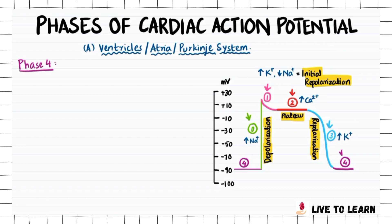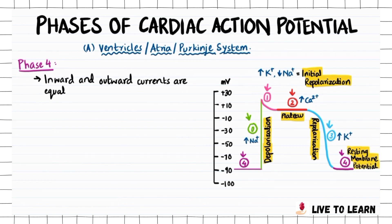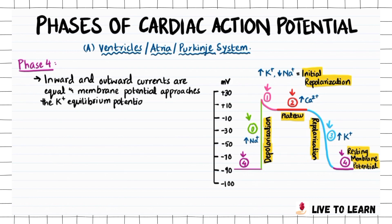Phase 4, the part shown in purple on the graph, represents the resting membrane potential. It is the period during which inward and outward currents are equal, and the membrane potential approaches the potassium equilibrium potential, i.e., minus 90 mV.